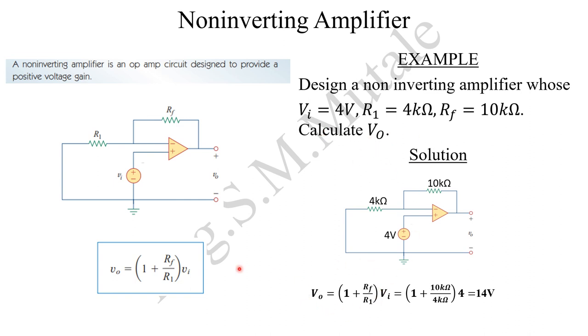Output voltage is basically this formula. When we replace the parameters, you realize that the input which was 4 volts will be amplified to 14 volts. This marks the end of my presentation on the non-inverting amplifier.